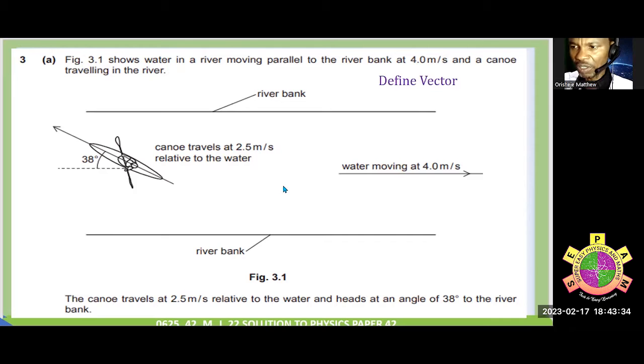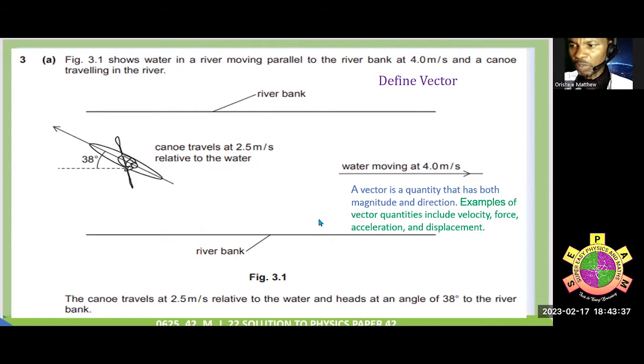But quickly, let's see what is a vector. A vector is a quantity that have both magnitude and direction. Examples of vectors are velocity, force, acceleration, distance, and momentum. A vector quantity, for you to describe them, you need to talk about the magnitude and direction. So what is the magnitude of a vector? The magnitude of a vector, like this canoe, while looking at the magnitude, is the speed of the canoe, which is 2.5 meters per second. Then the direction is, where is the canoe pointing to? Where is it going? Where is it moving towards? That is the direction. In this case, it's moving towards up here at the angle of 38 degrees.